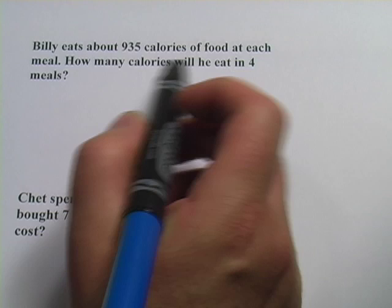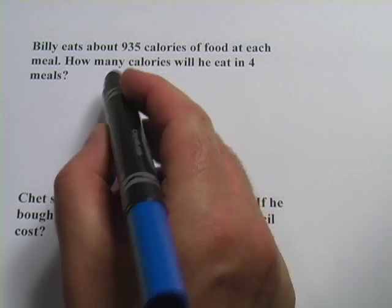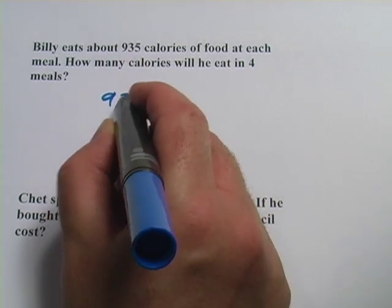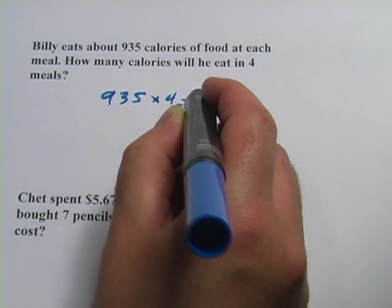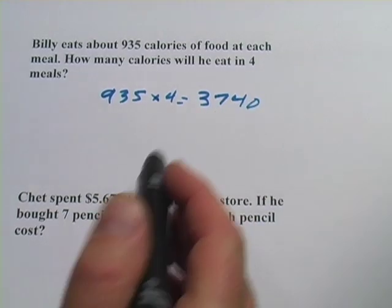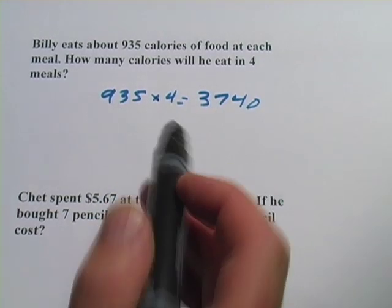Well, since there are four of this thing, all we have to do is multiply this thing by four. So we have 935 times four, and that is 3740. That's a lot of calories. Billy must be an athlete.